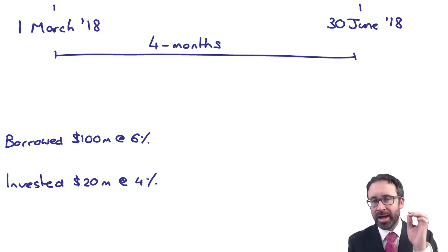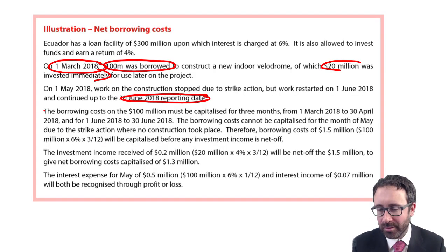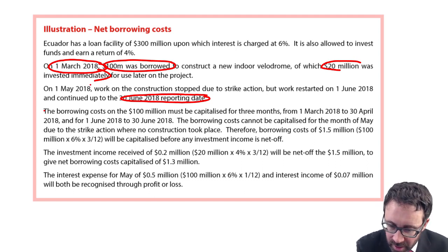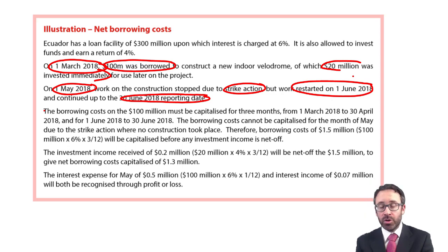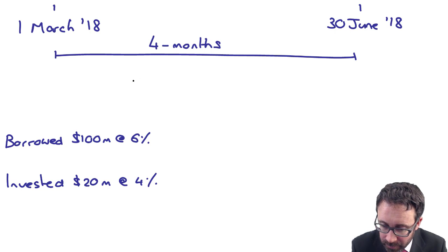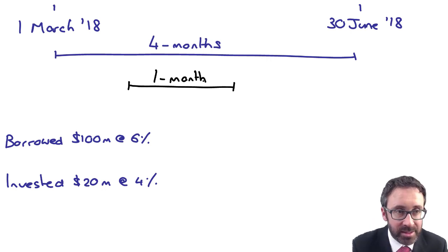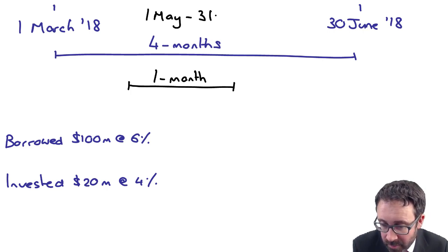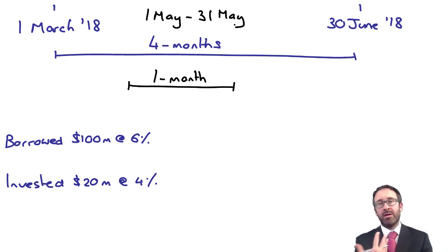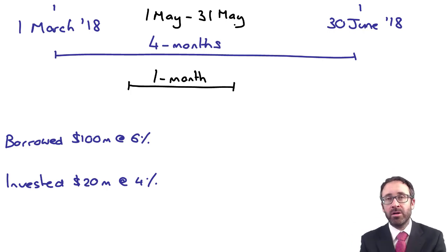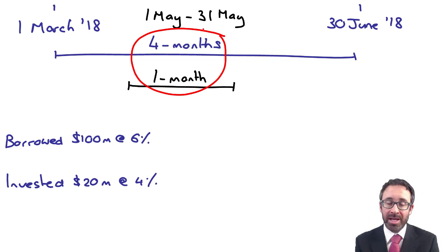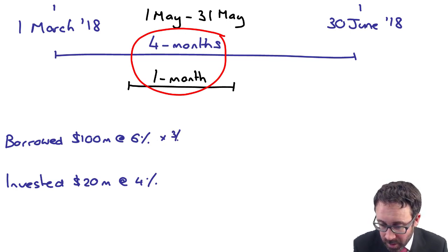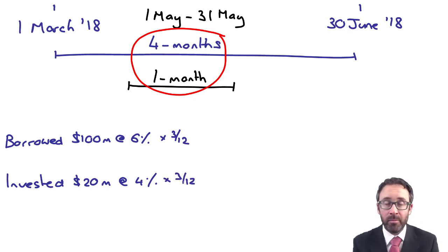You have to be careful though, because you might think you're going to capitalise it for the full four months — but read on, things happen. On the 1st of May 2018 construction stopped due to strike action, but restarted on the 1st of June 2018. So there is one month — from the 1st of May to the 31st of May — where there was strike action. During strike action we don't capitalise the borrowing costs, and likewise we can't net off the investment income. So that's four months less one month — effectively we capitalise for three months and net off the borrowings for three months.